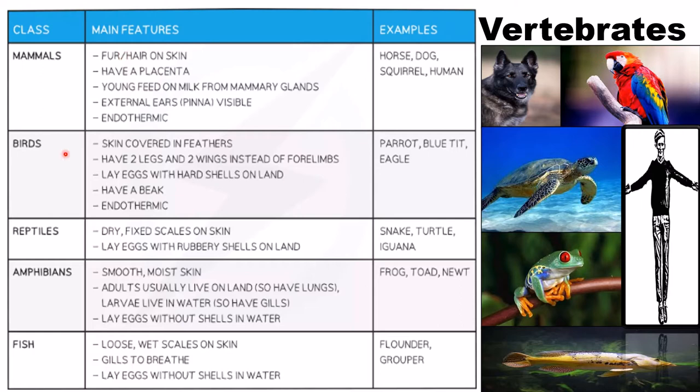Amphibians have smooth and moist skin. Comparing skin types: mammals have fur, birds have feathers, reptiles have scales, and amphibians have moist skin. Adults usually live on land and larvae live in water, so larvae have gills and adults have lungs. They lay eggs without shells in water — unlike reptiles which have shells. Examples are frog, toad, and newt.